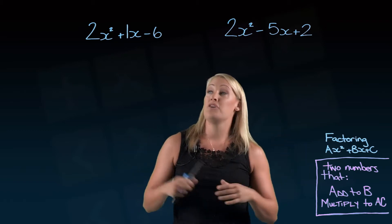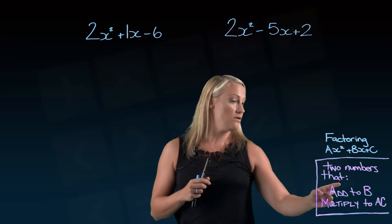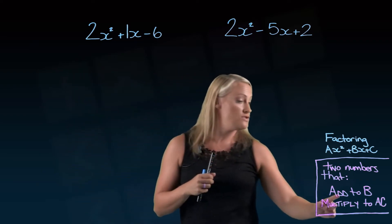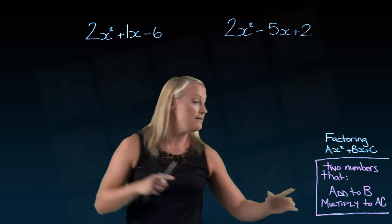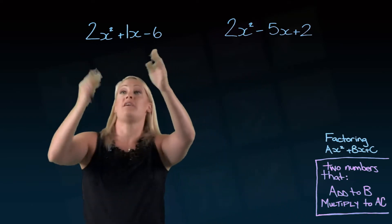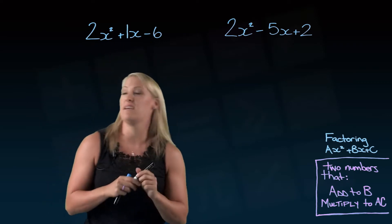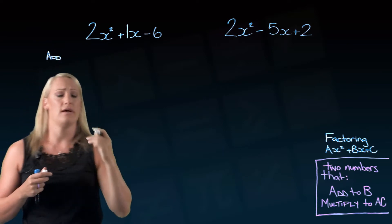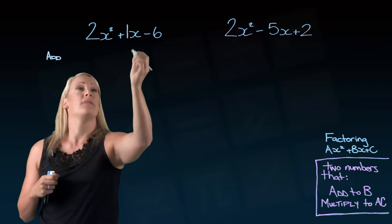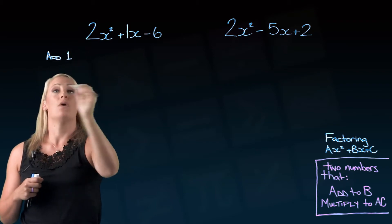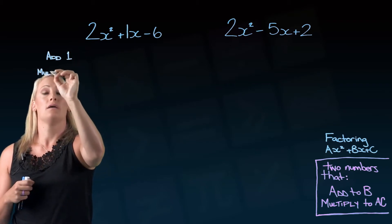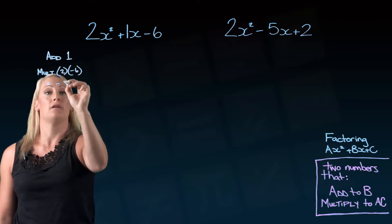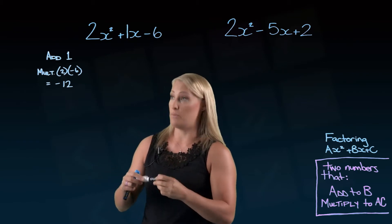And once you understand that, you're kind of well on your way to factoring these. So what we're going to do is think of two numbers — we're going to think of two numbers that add to b, so in this case add to 1, and multiply to a times c. So a times c, 2 times negative 6, that would be negative 12. When you first start doing these questions, there's nothing wrong with writing this down just to keep yourself in check.